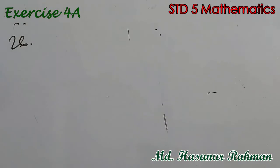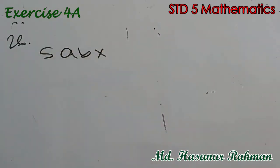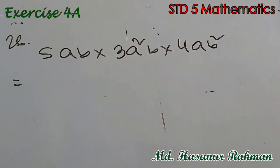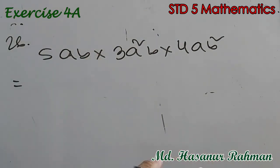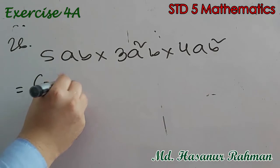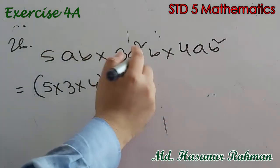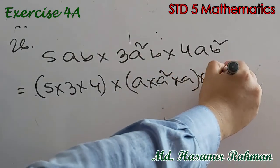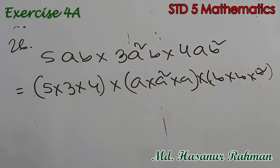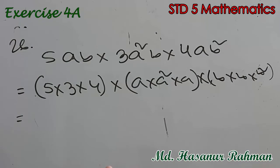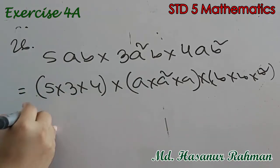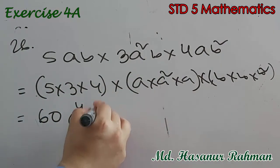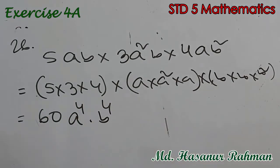Number 26 says 5ab into 3a squared b into 4ab squared. Group the numbers and variables: 5 into 3 into 4, then a into a squared into a, then b into b into b squared. 5 into 4 is 20, 20 into 3 is 60. a into a squared into a is a to the power 4. b into b into b squared is b to the power 4. So the answer is 60a to the power 4 b to the power 4.